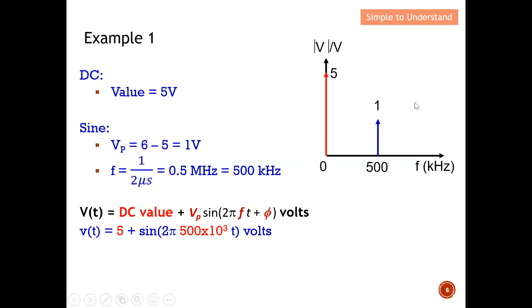Next, I draw the frequency domain. The DC term of 5 volts appears at zero hertz as a bar of height 5 volts. The sine wave at 500 kHz appears as a bar of height 1 volt at 500 kHz. So the frequency domain has two components: the DC term and the sine wave. You can transform time domain to frequency domain either by deriving the equation first, then the frequency domain, or directly by reading off the DC voltage and the Vp of the sine wave.